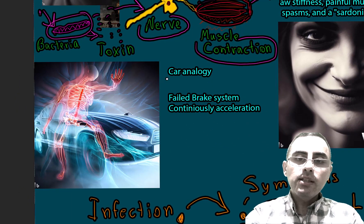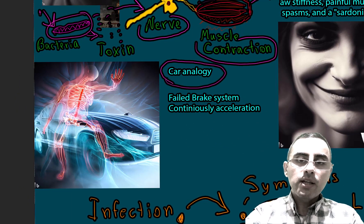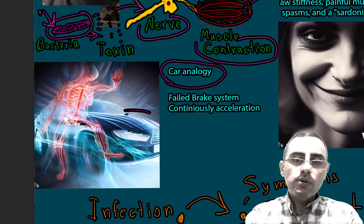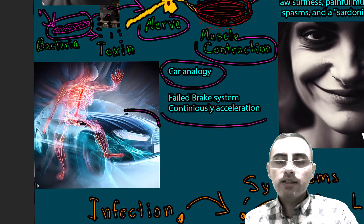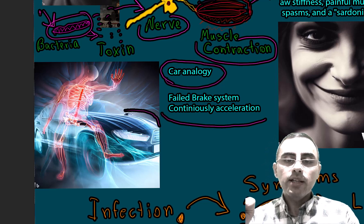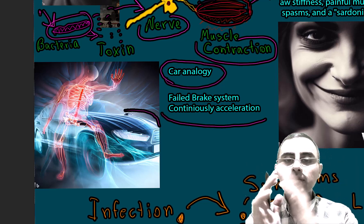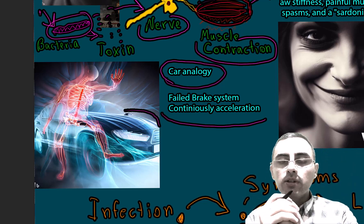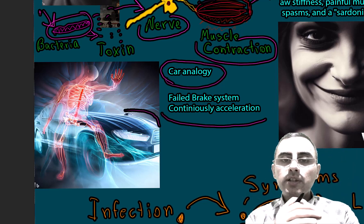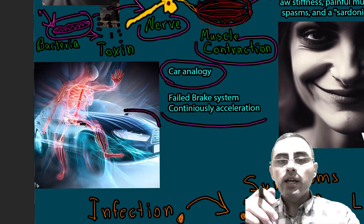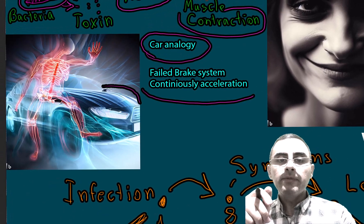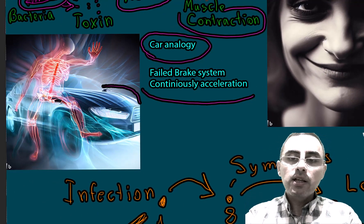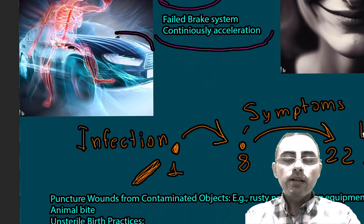A real-life analogy: you can imagine tetanus infection as a car with a failed brake system that continuously accelerates and speeds up and you cannot control it. This represents the continuous muscle contraction, because the neurons responsible for inhibition and relaxation of muscles are inhibited, so muscles stay continuously contracted.